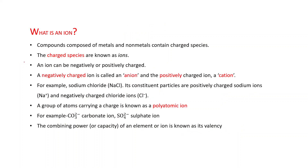First, what is an ion? Compounds composed of metals and non-metals contain charged species. When a metal and non-metal compound is formed, that compound has charged species, and these charged species are known as ions. An ion can be negatively or positively charged, depending on which charge is present on that ion.